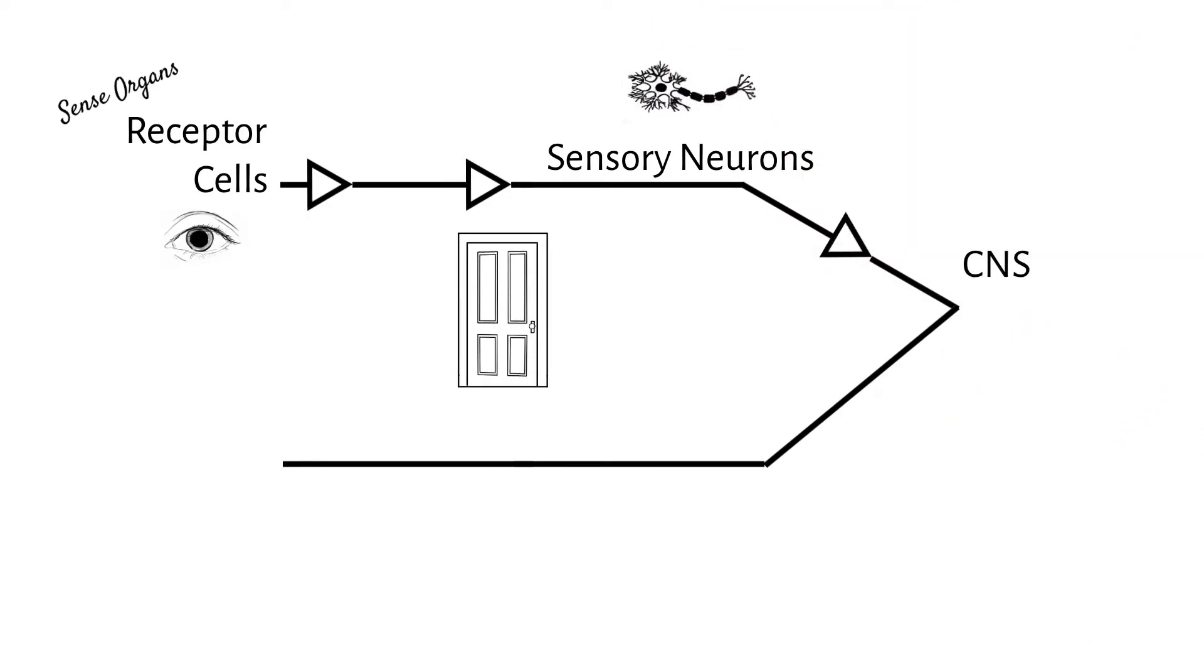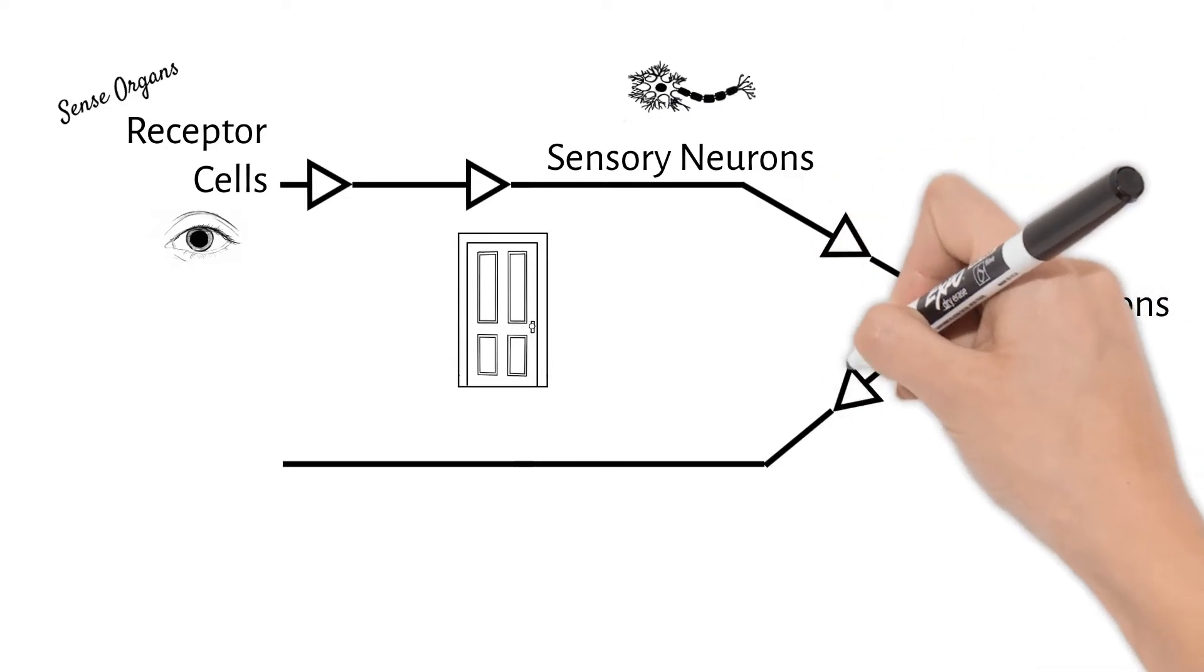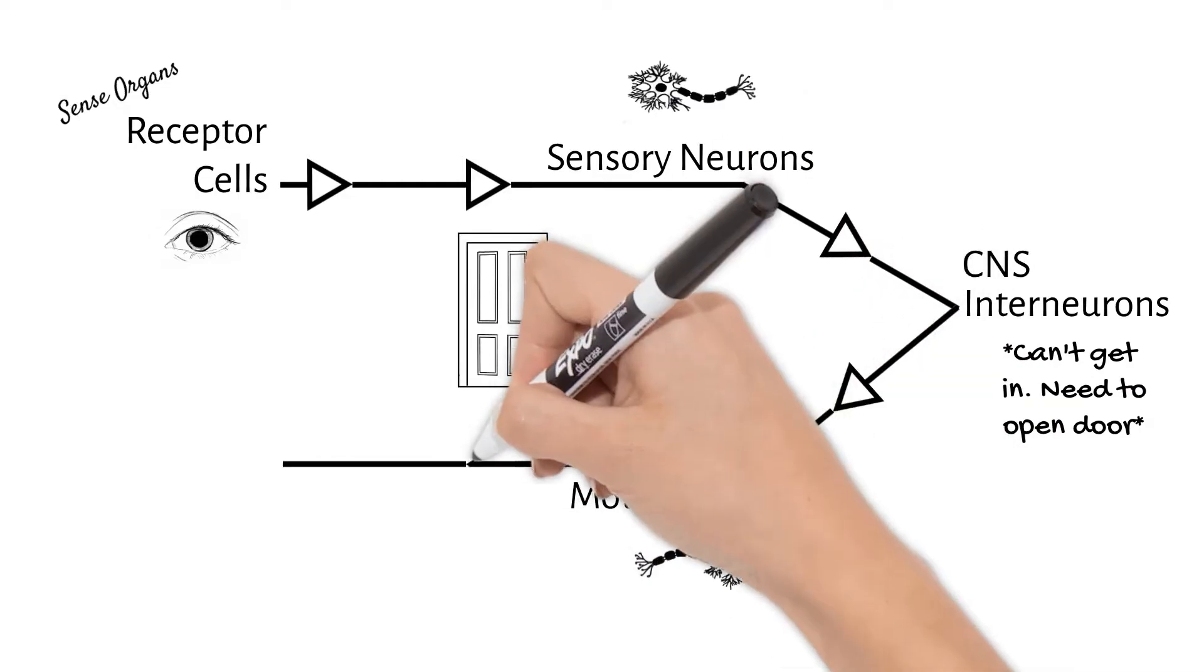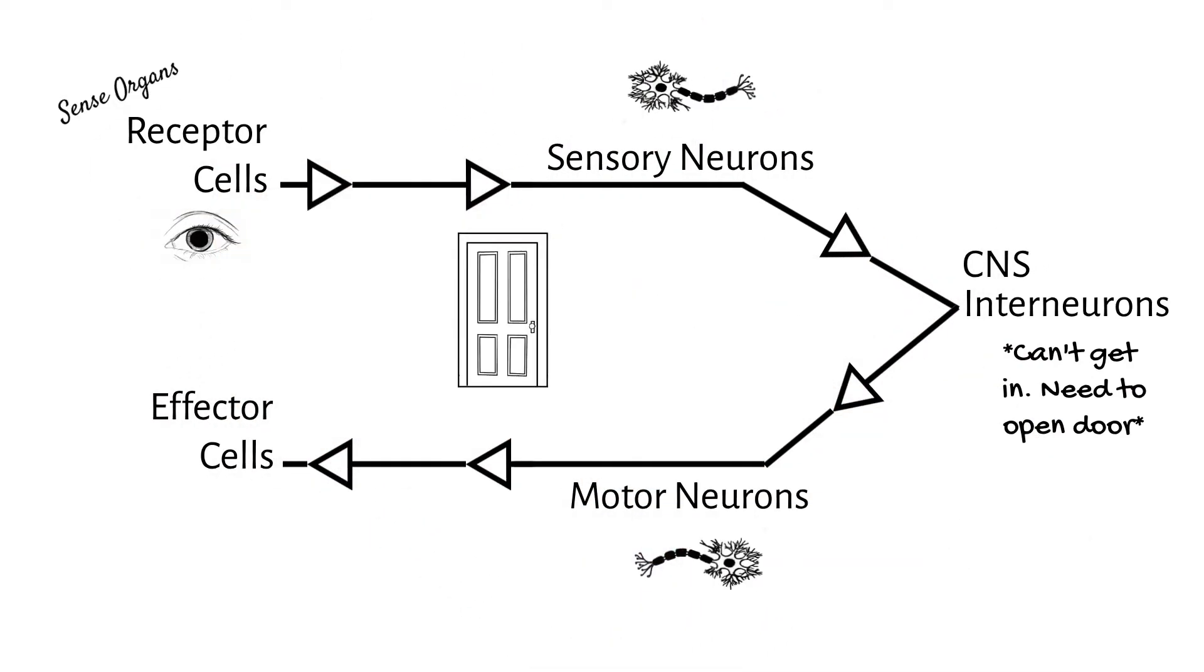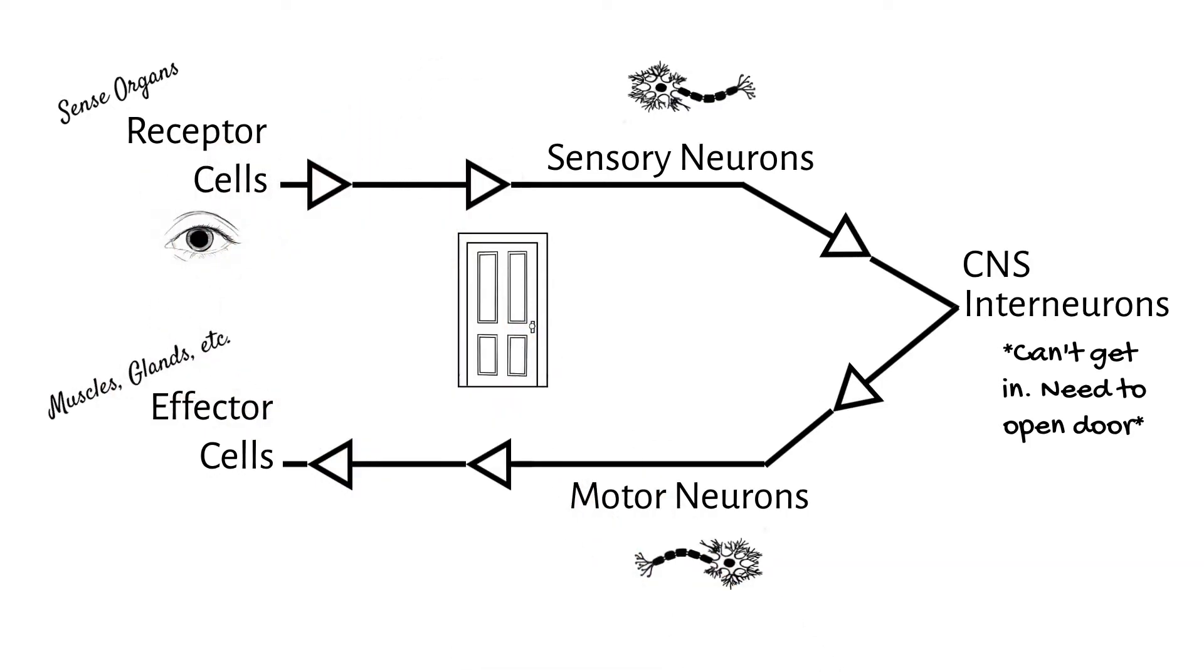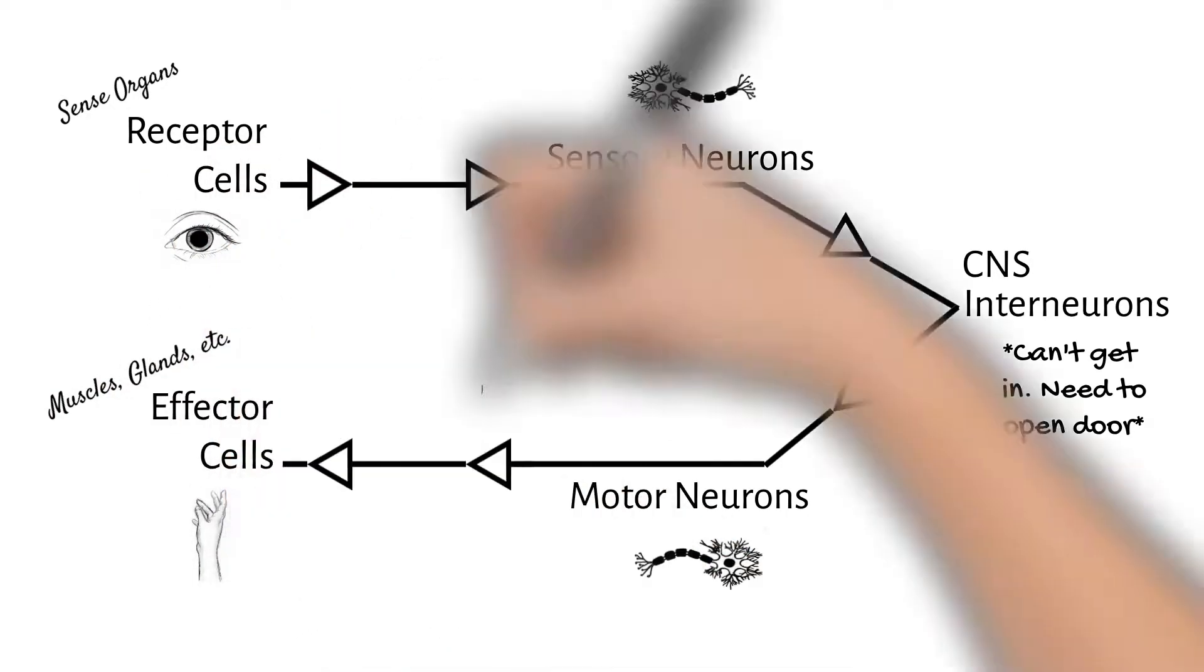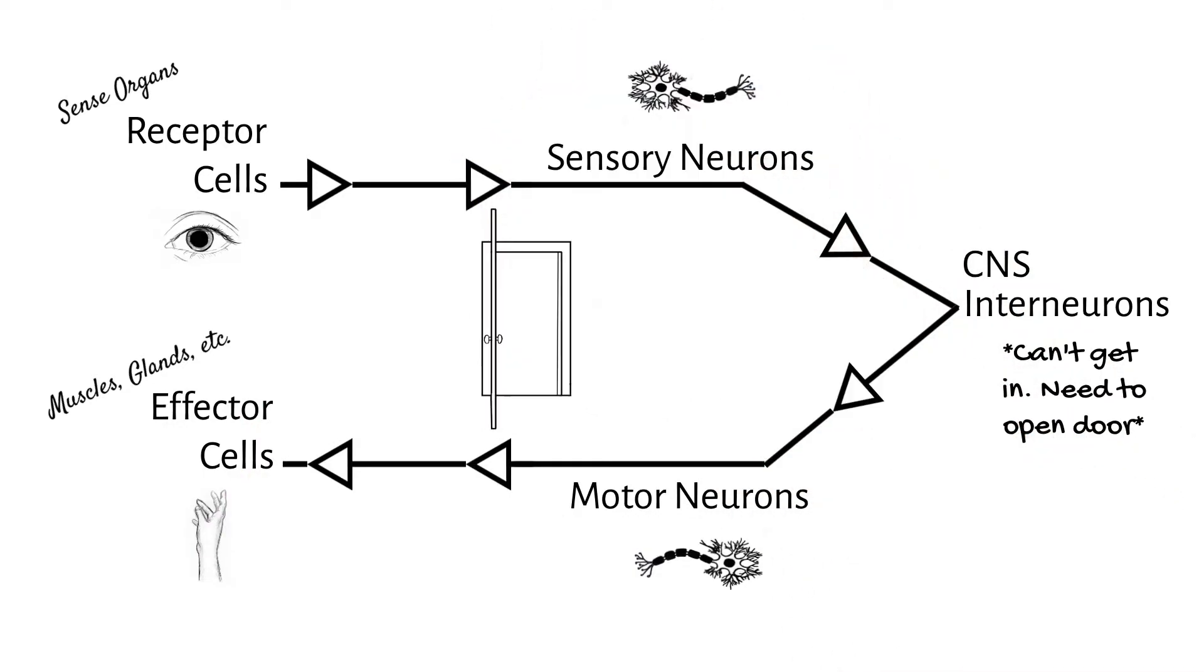The information is interpreted by interneurons in the CNS. In this case, you can't get in with the door closed. You'll have to open it. A response is sent out from the CNS by motor neurons to effector cells. The effector cells are in muscles or glands that respond. In this case, your hand and arm to turn the handle and open the door.